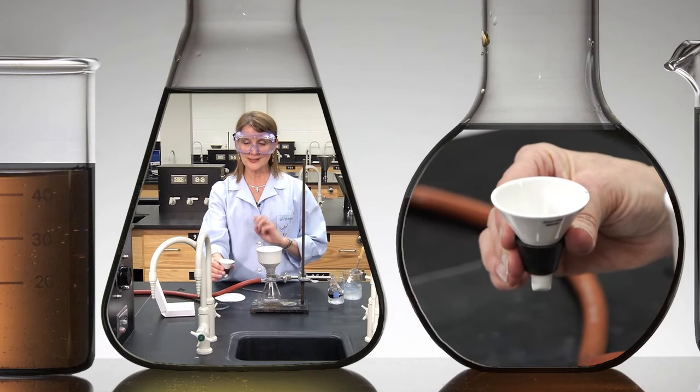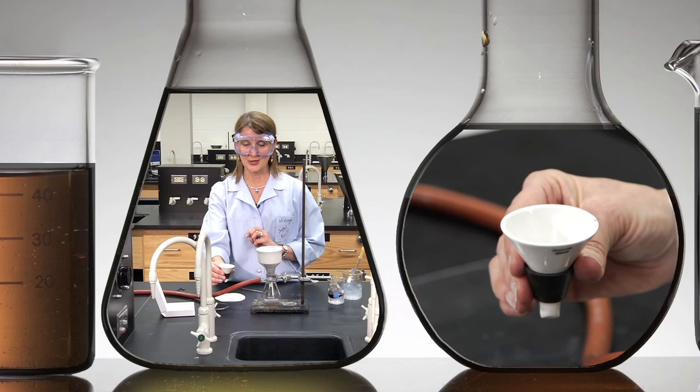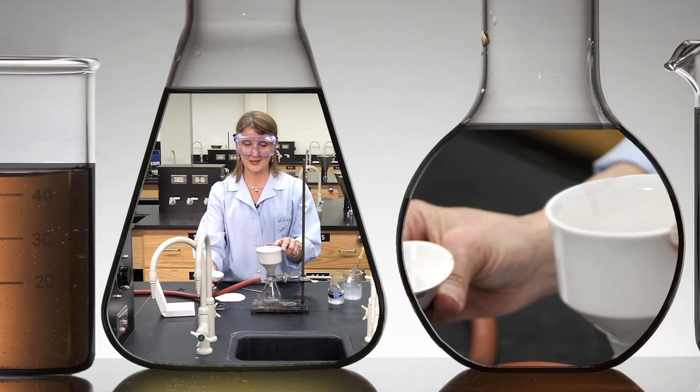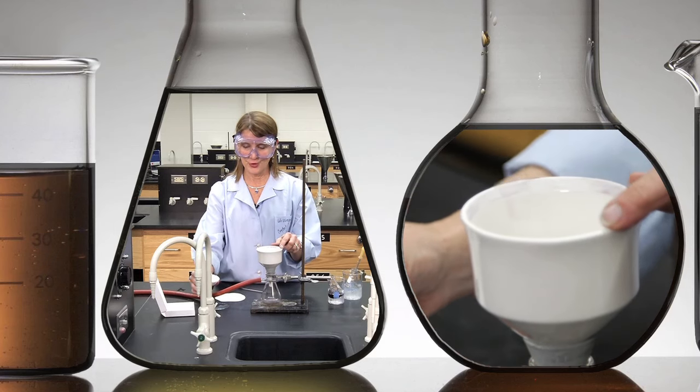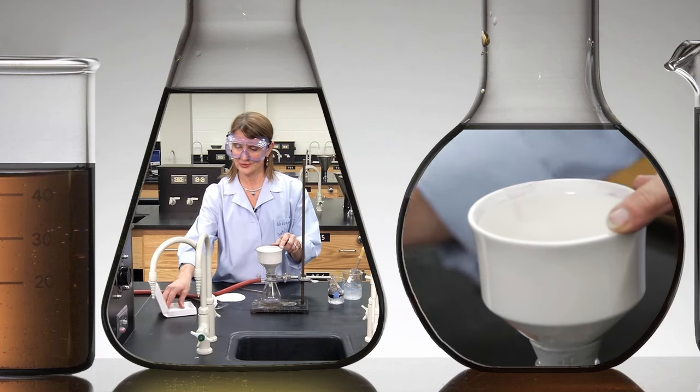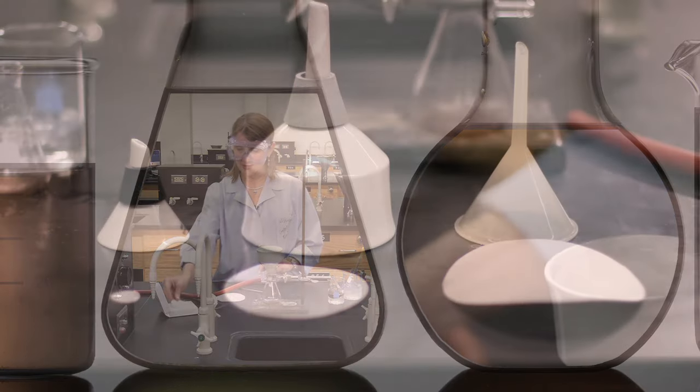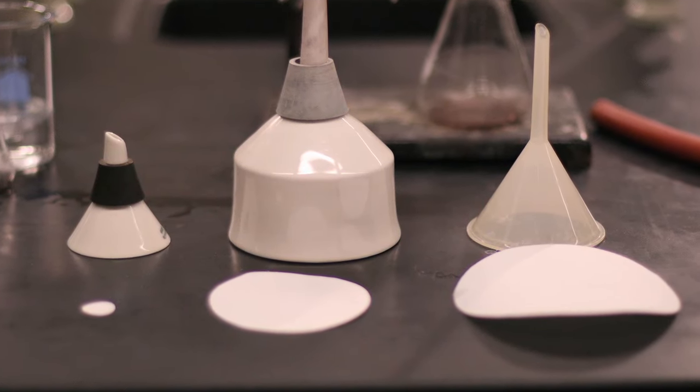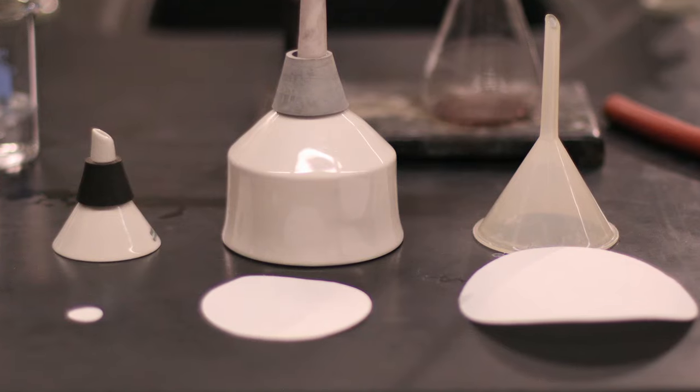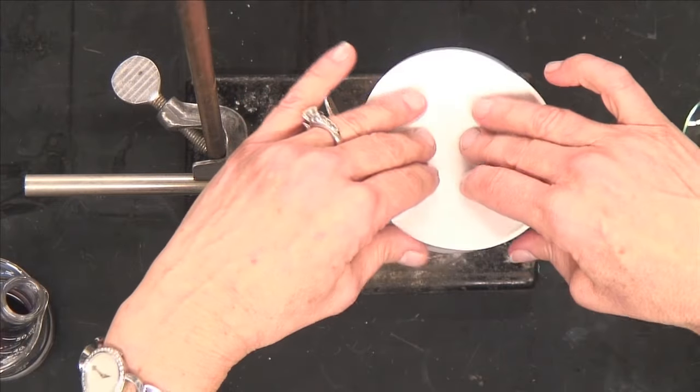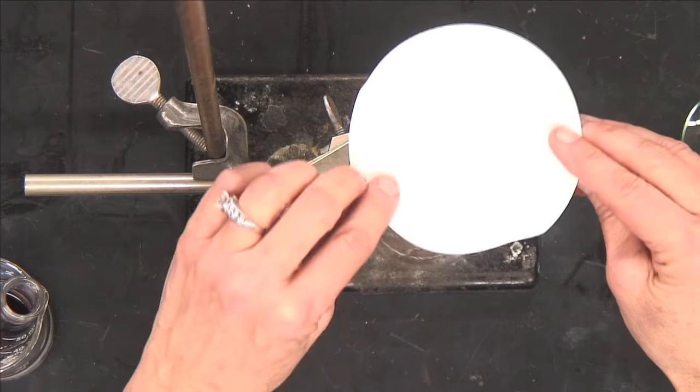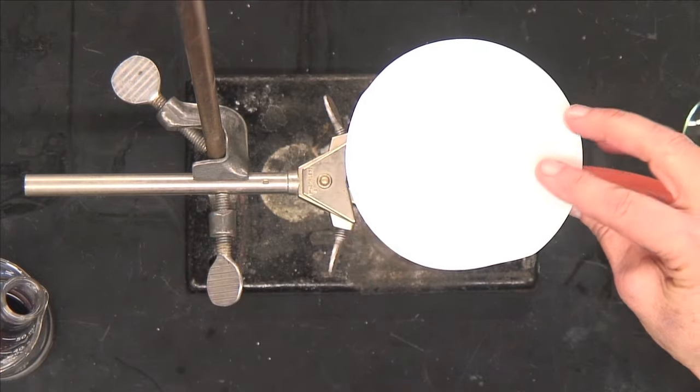So there's three types of filter papers found in our laboratory. The small one for the Hirsch funnel. The next size larger for the Buchner funnel, and then the filter papers that are larger that we use for gravity filtration. You do not want to try to stuff the gravity filter paper into the Buchner funnel as this would not be a good vacuum filtration.